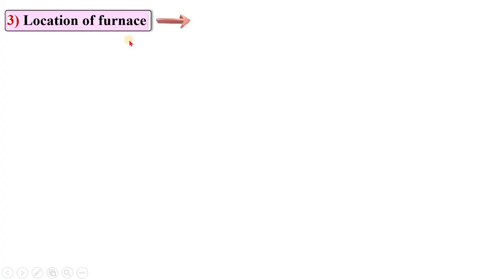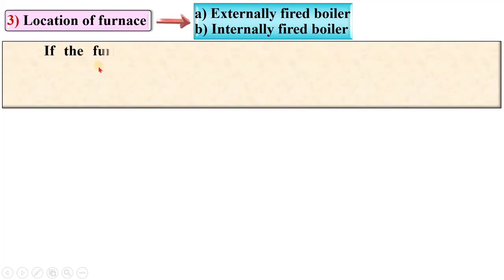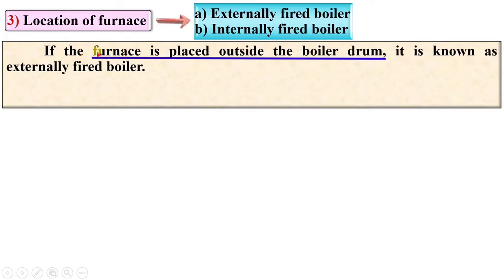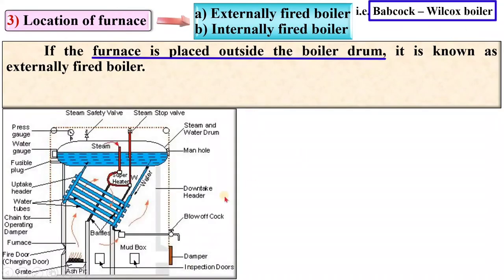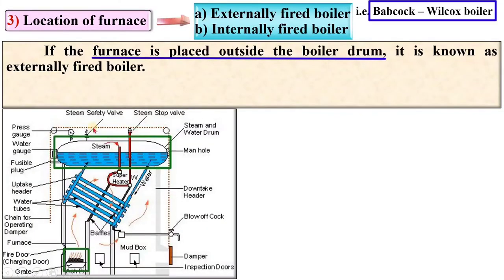According to the location of furnace, boilers are classified as externally fired and internally fired boilers. If the furnace is placed outside the boiler drum, it is known as an externally fired boiler. The example is the Babcock and Wilcox boiler, and here you can see the furnace is outside the boiler drum, that's why it is known as an externally fired boiler.